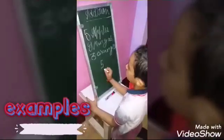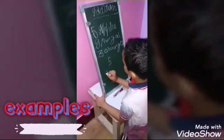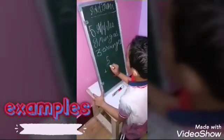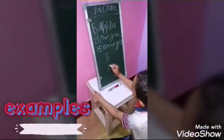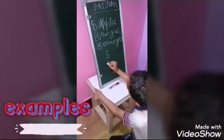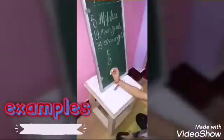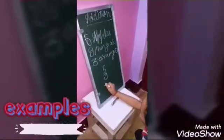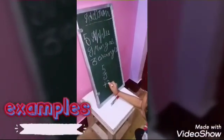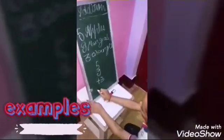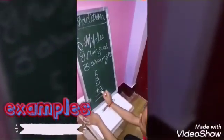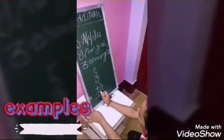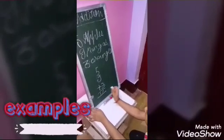5 plus 9 plus 3 is equal to 17. So have a nice day.